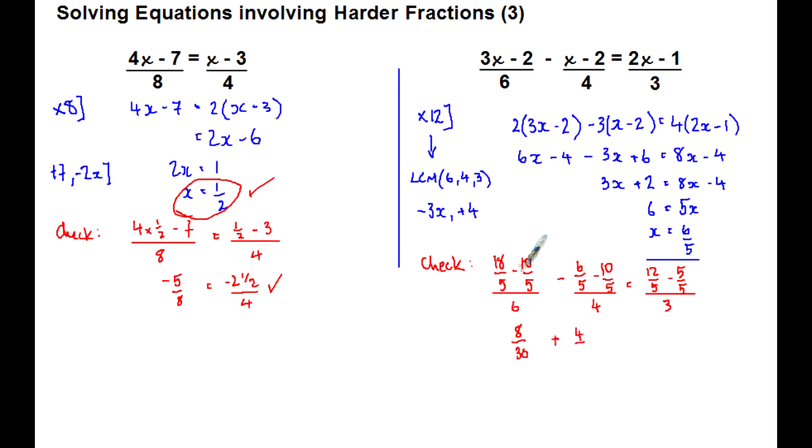18 minus 10 is 8, divided by 5, divided by 6 is 8 over 30. 6 minus 10 is minus 4, so the minus and a minus makes it a plus, 4 over 5 over 20. And then 12 minus 5 is 7, divided by 5, divided by 3 is 7 over 15. And you can see that this makes sense just by considering equivalent fractions. Double the top and the bottom of the first one, so we've got 16 over 60. Treble the top and the bottom of the second one, 12 over 60.